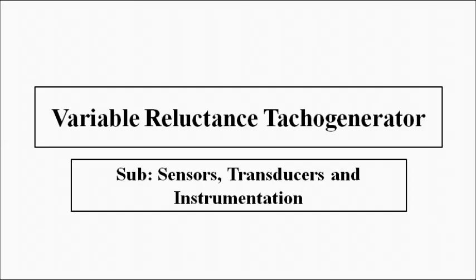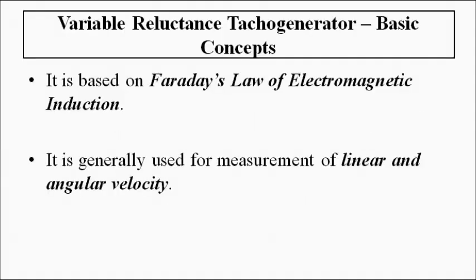This device or instrument is generally used for the measurement of angular velocity — angular speed associated with motors, generators, or rotating devices. This variable reluctance tachogenerator is based on Faraday's law of electromagnetic induction, and as mentioned, it is used for the measurement of linear and angular velocity, mostly angular velocity associated with rotating electrical machines.